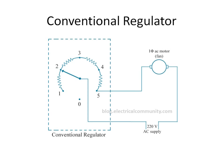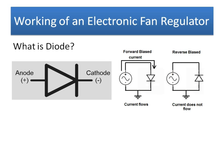The main disadvantage of the conventional regulator is that it causes a huge amount of heat loss, or I-squared-R loss, because there are a number of resistors. This heat loss reduces the life of the regulator and also affects your electricity bill. That's why electronic regulators are now in fashion.